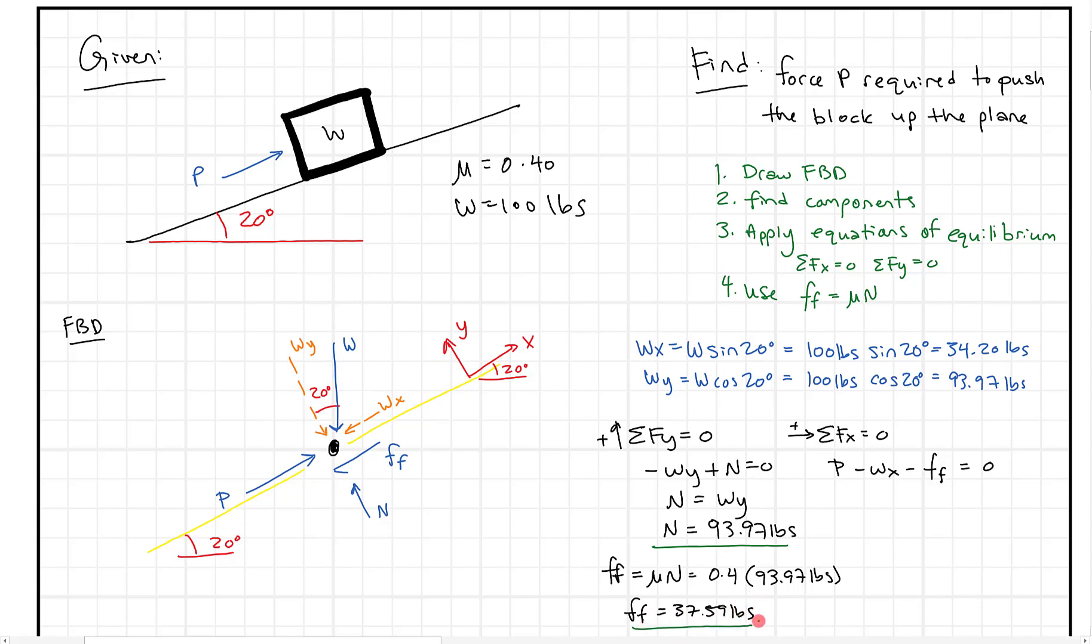Once we know this friction force, now we've basically come to the point where we know wx, we know the friction force, so we can solve for P directly. So P is going to equal essentially wx plus Ff. So wx we got was 34.20 pounds, and Ff, the friction force, is 37.59 pounds. When we add those together, we get a force of 71.9 pounds to push this thing up the plane.